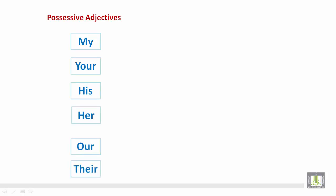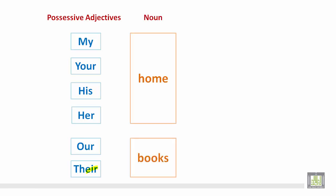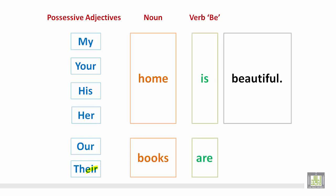Notice the spelling: e-i-r. Nouns: home, books. The verb be: is, are. Examples of complements: beautiful and in the class.